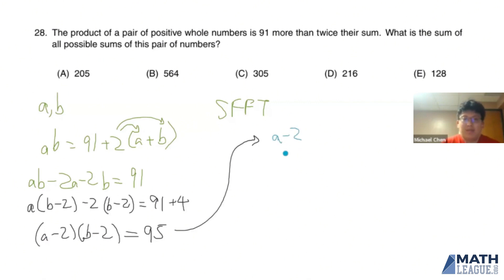So now we can either have A minus 2 equals 1 and B minus 2 equals 95, which yields A equals 3, B equals 97. Or we can have A minus 2 equals 5 and B minus 2 equals 19. So that would give us A equals 7 and B equals 21.